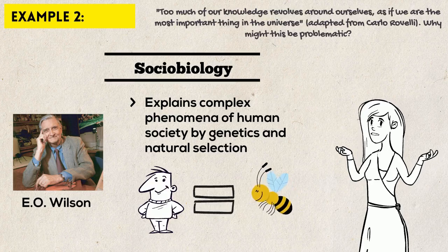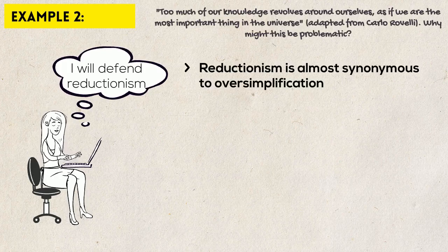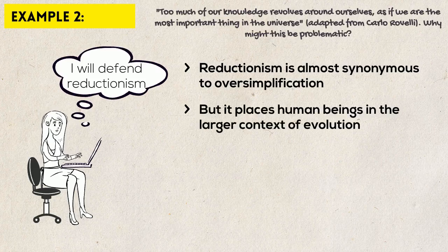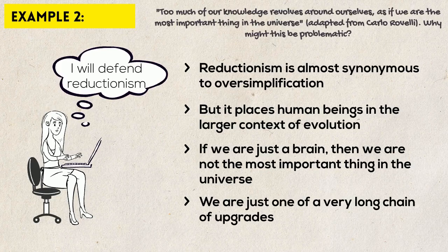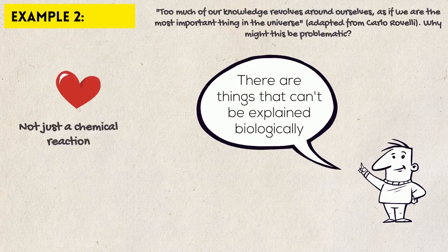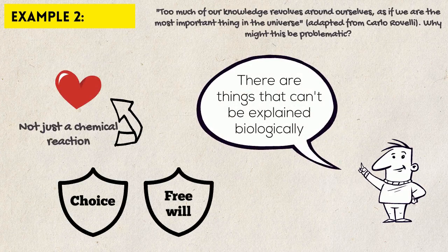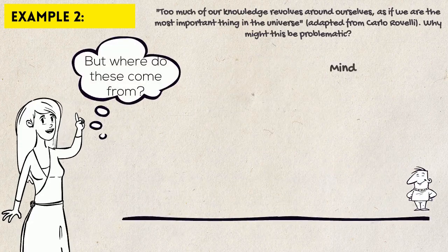It is common among students to criticize reductionism, saying that a reductionist theory is a bad theory. Indeed, there is a negative connotation associated with the word reductionism — it is almost synonymous with oversimplification. However, Tatiana decided to defend reductionism. One big advantage, according to her, is that it places human beings in the larger context of evolution. If we're just a brain — although a highly evolved one — then we're not the most important thing in the universe. We're not separate in any way from our animal ancestors, and our brain is just one of a very long chain of upgrades in this grand evolutionary process. Theories that argue against reductionism claim that there are things in the human mind that cannot be explained biologically and that we should explain them otherwise — for example, that love is not only a chemical reaction but also a choice, free will, and that society is a product of culture. This position sounds attractive, but the major difficulty non-reductionists face is that they cannot explain where these non-biological phenomena come from.